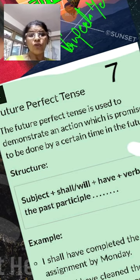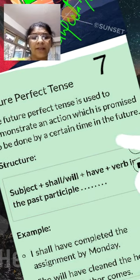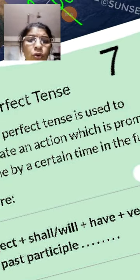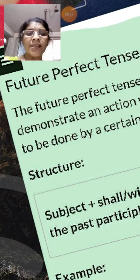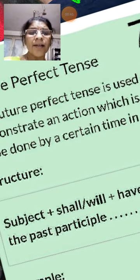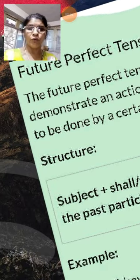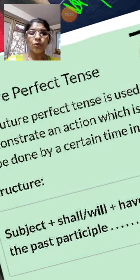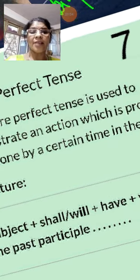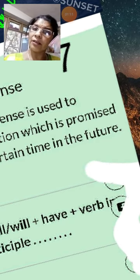The future perfect tense is used to demonstrate an action which is promised to be done by a certain time in the future. There is a certain time in the future.